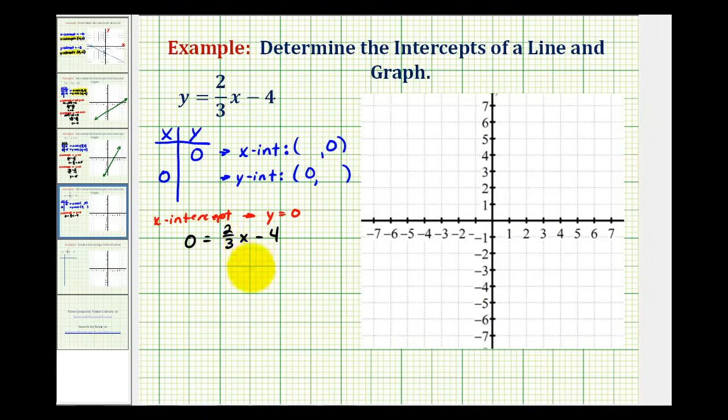So, to solve this equation for x, we'll have to add four to both sides. So, we'd have four equals two-thirds x. And now, to solve for x, we're going to multiply it by the reciprocal of two-thirds. So, we're going to multiply both sides by three-halves.